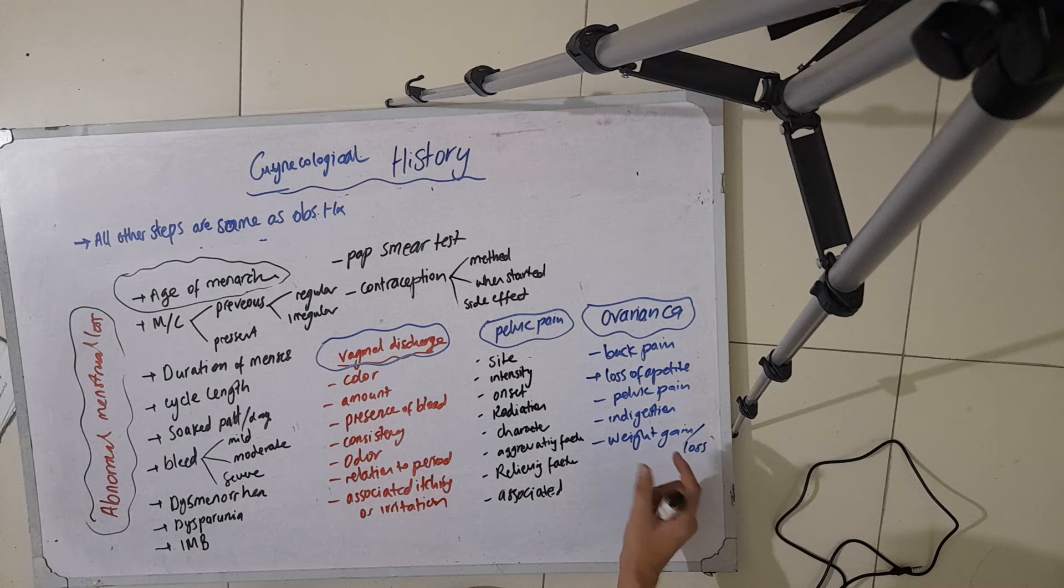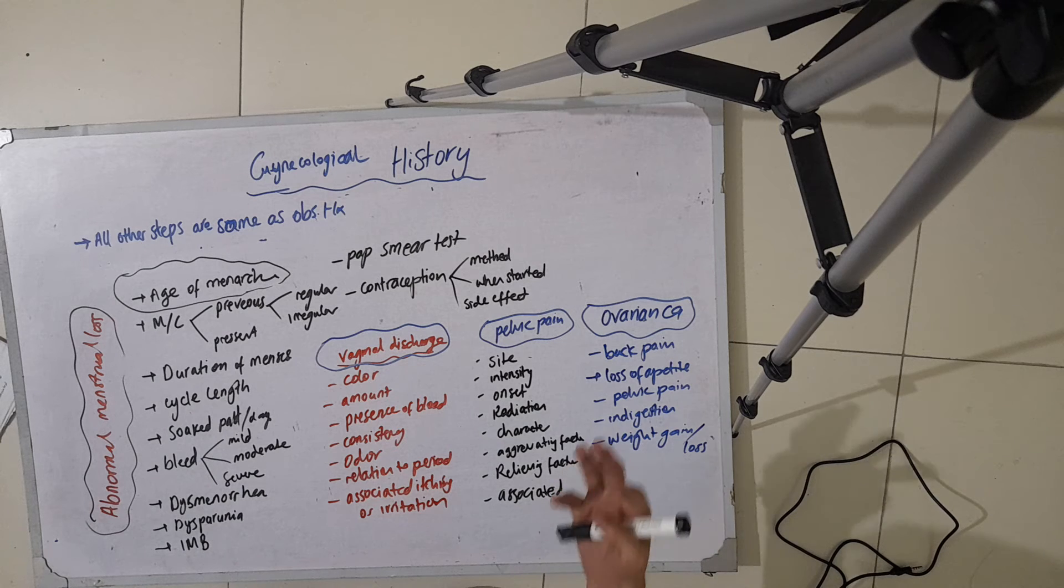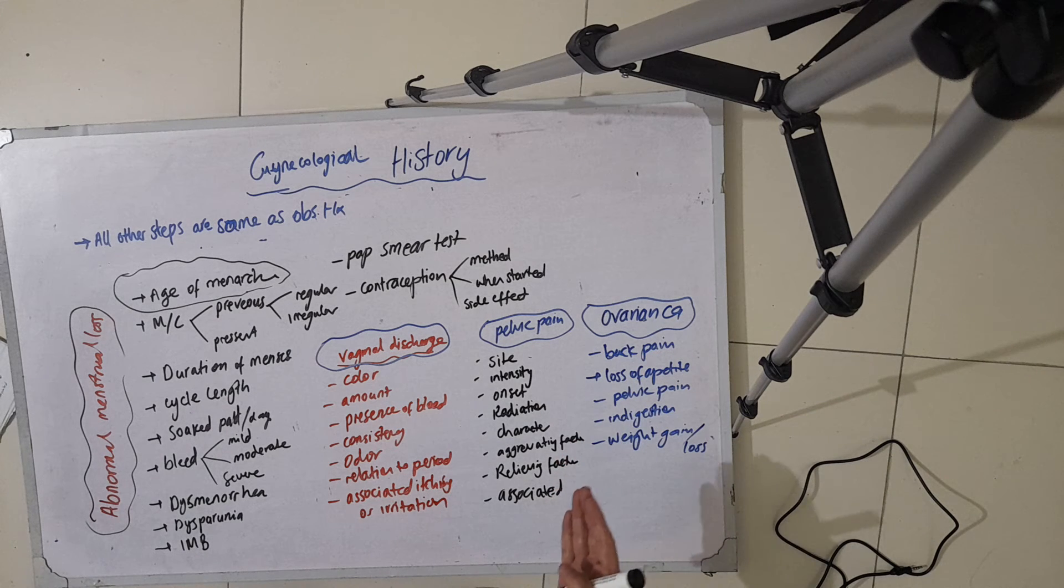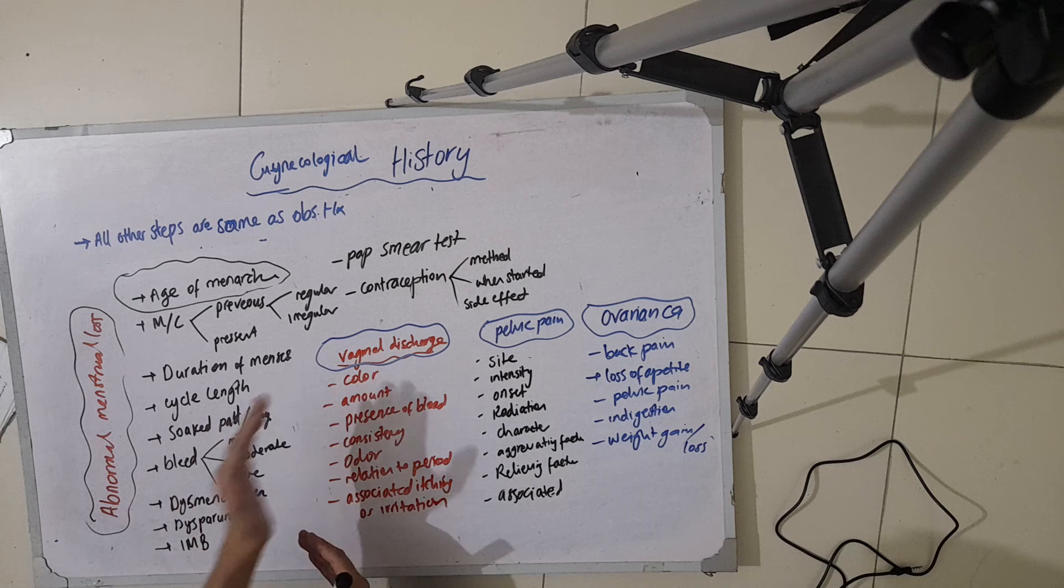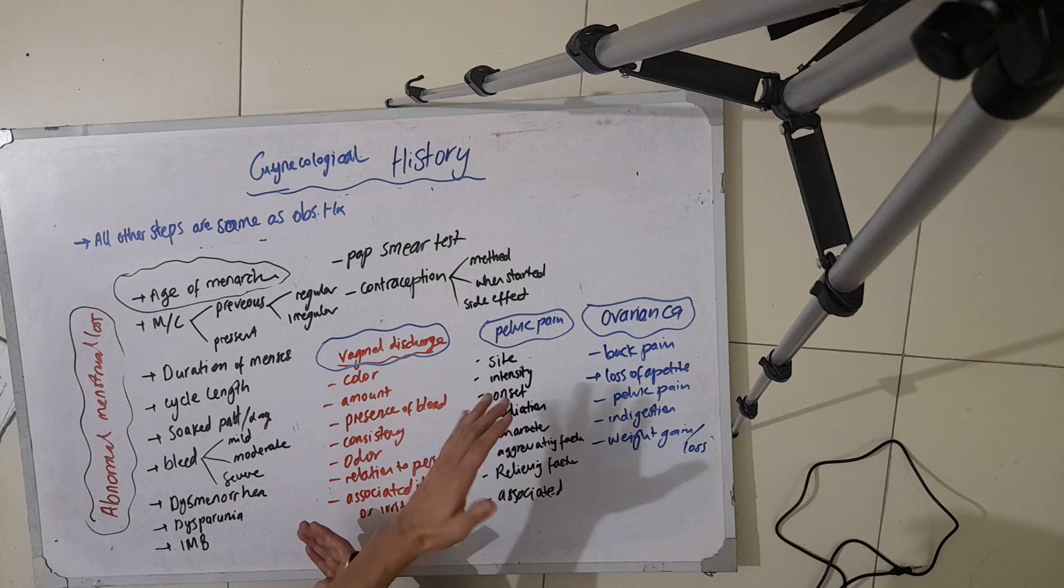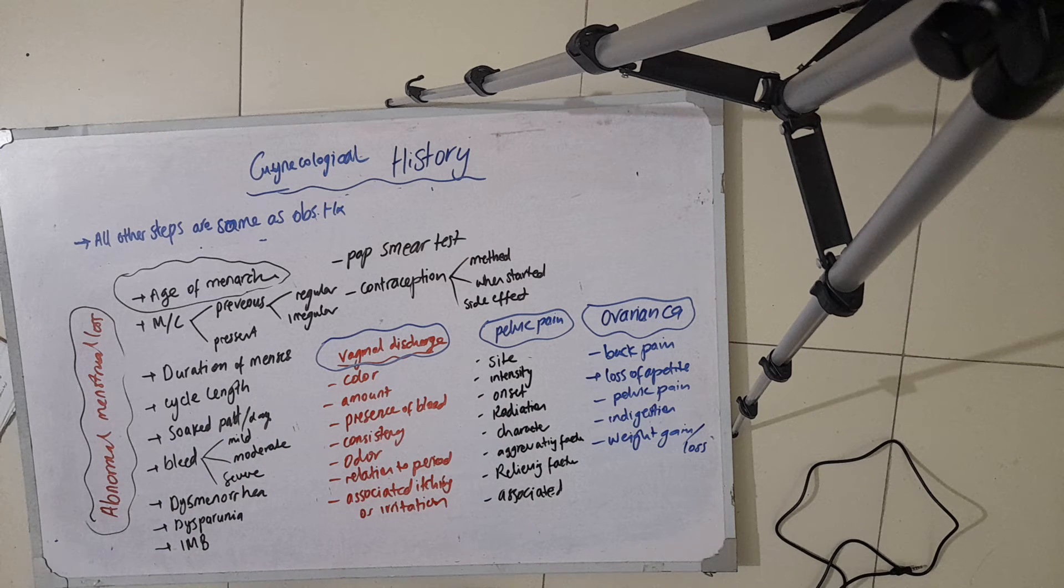You also ask about the history of back pain, loss of appetite, pelvic pain radiation, and weight loss to exclude ovarian cancer. So in the history of presenting illness, you should ask all these points when they come with these specific presenting complaints. The other steps are mainly the same as in obstetric history.